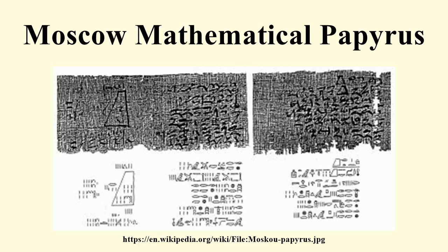The papyrus is approximately 5.5 metres long and varying between 3.8 and 7.6 centimetres wide. Its format was divided into 25 problems with solutions by the Soviet Orientalist Vasily Vasilyevich Struve in 1930.